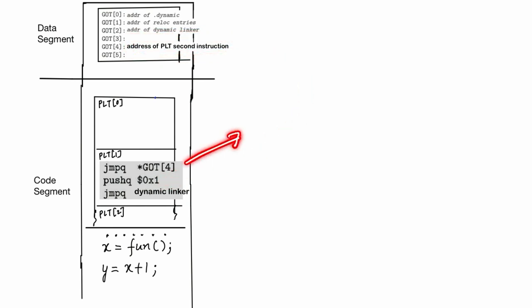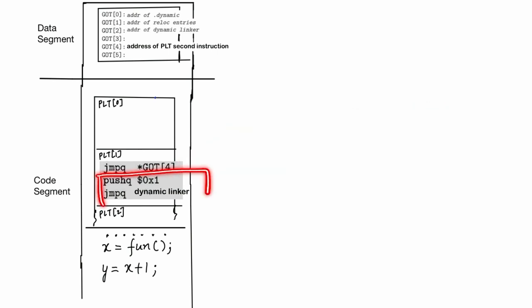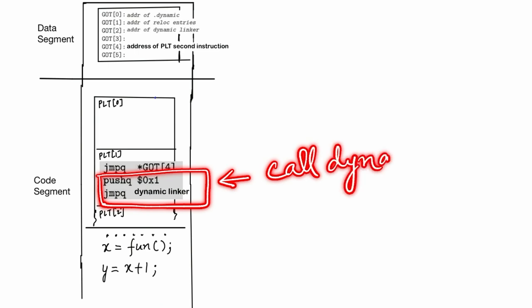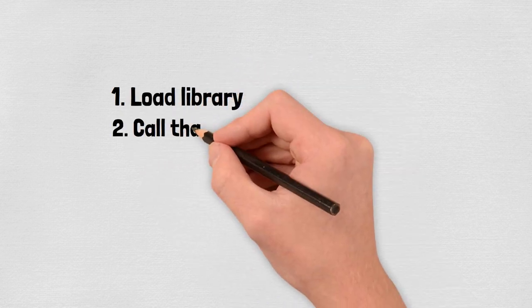As you know, the initial value actually points to the second instruction in the PLT entry, so this jump ultimately leads to the second instruction in the PLT entry. The remaining two entries initiate a call to dynamic linker to resolve this function. The dynamic linker then leaps into action.